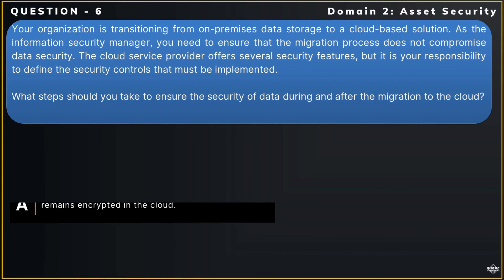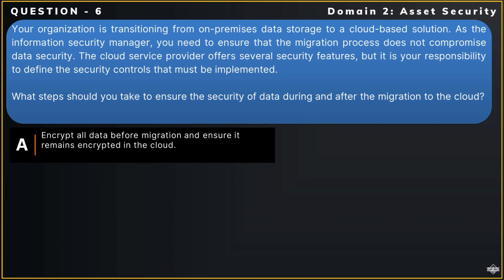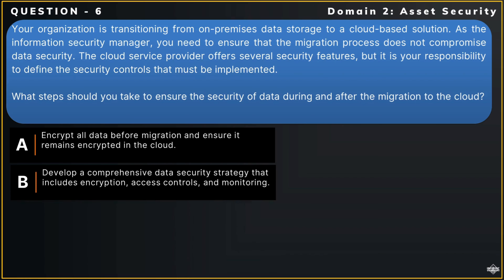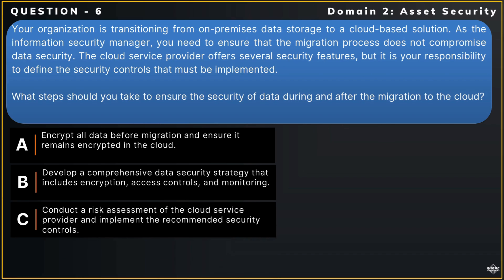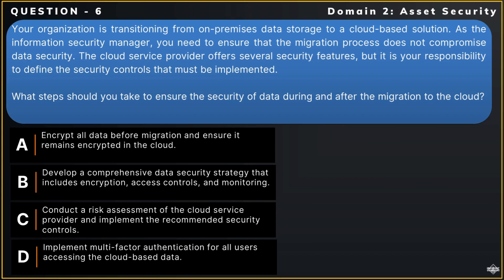The options are: Option A — Encrypt all data before migration and ensure it remains encrypted in the cloud. Option B — Develop a comprehensive data security strategy that includes encryption, access controls, and monitoring. Option C — Conduct a risk assessment of the cloud service provider and implement the recommended security controls. Option D — Implement multi-factor authentication for all users accessing the cloud-based data.